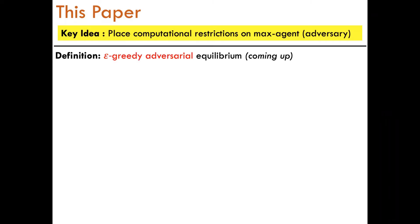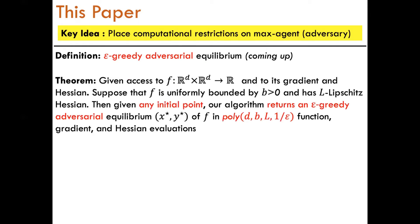Using this idea, we define a new equilibrium concept which we call the Epsilon-Greedy Adversarial Equilibrium. Our main result is an algorithm which converges to such an equilibrium point in polynomial time. Namely, we show that if our algorithm is given access to a function f and to its gradient and Hessian, and if f is uniformly bounded by some number b and has L Lipschitz-Hessian, then given any initial point, our algorithm returns an Epsilon-Greedy Adversarial Equilibrium in a number of evaluations of the gradient and Hessian which is polynomial in 1 over epsilon and also polynomial in the dimension d.